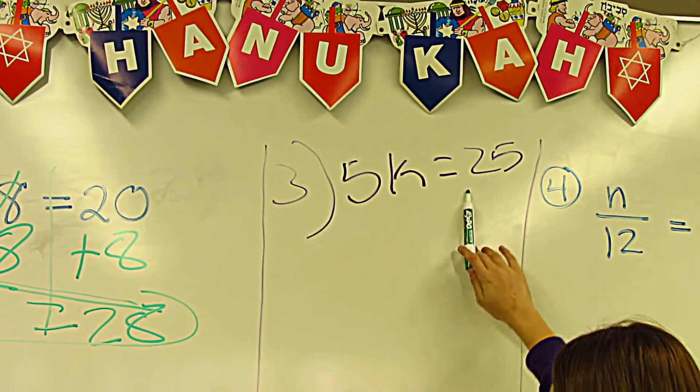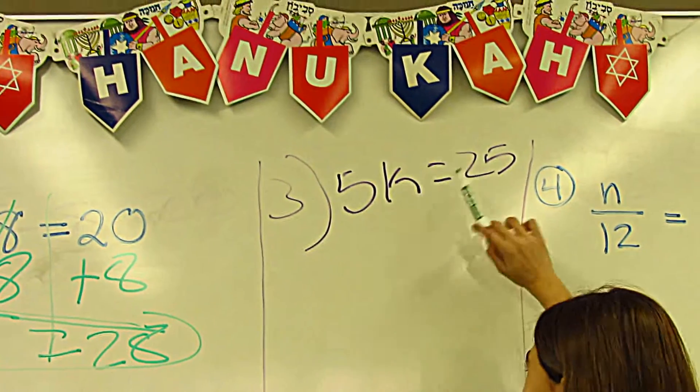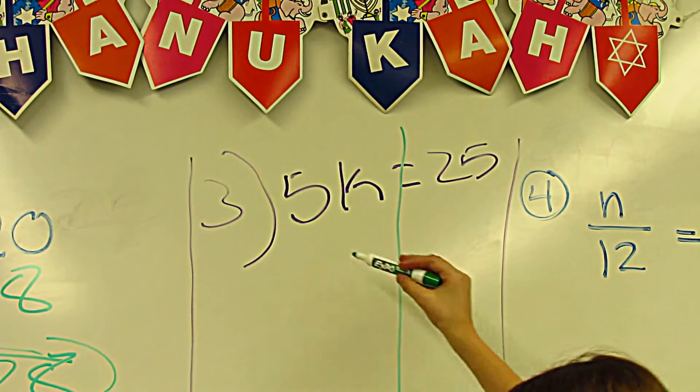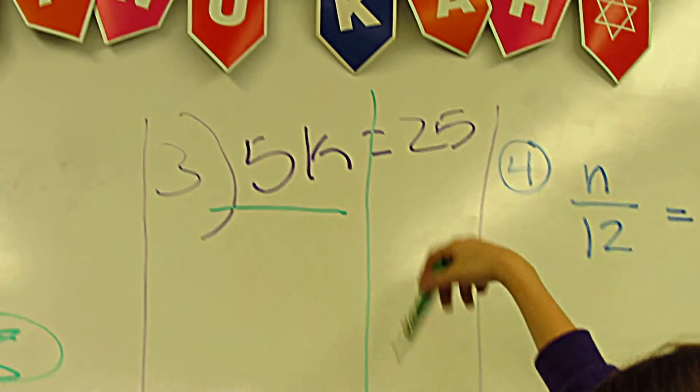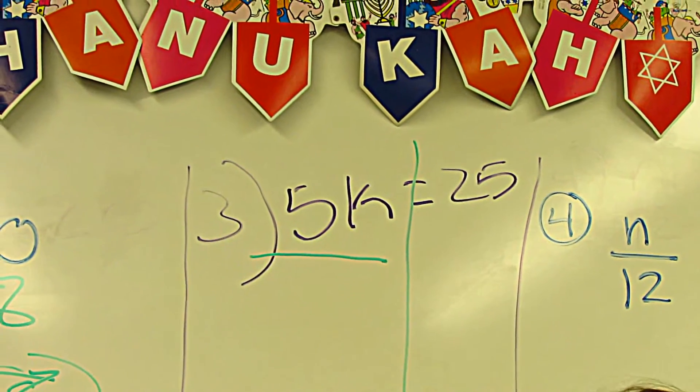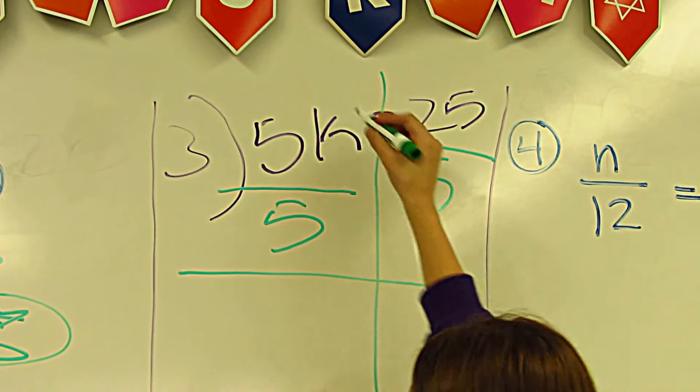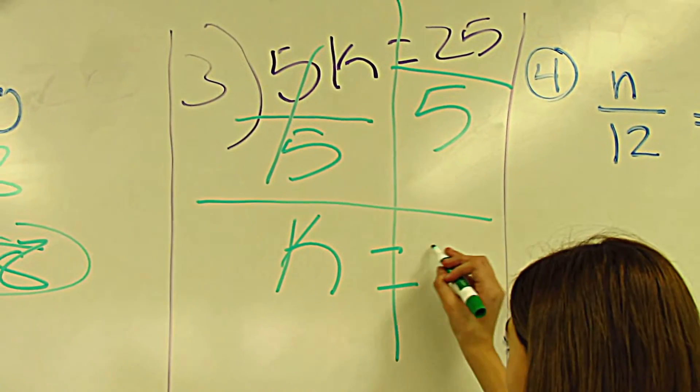Five K is equal to twenty-five. That's five times K equals twenty-five. The first step is dividing, because the opposite of times is dividing. That cancels out, so you're going to drop down your K. K is equal to five.